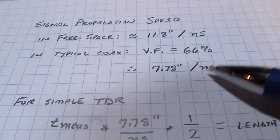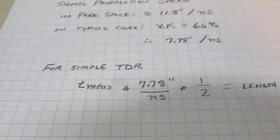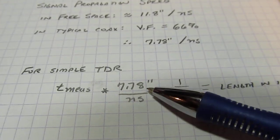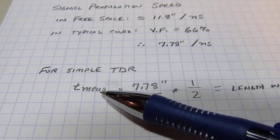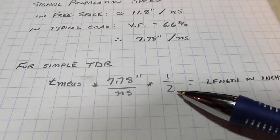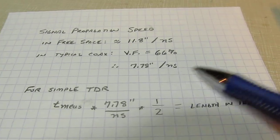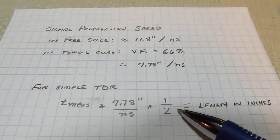The way to calculate the length is we simply take that seven point seven eight factor, multiply it by our measured value in nanoseconds, and divide it in half because this measurement is round trip out to the end of the coax and reflected back, so we just need to cut that in half.